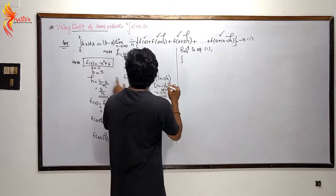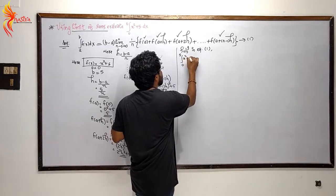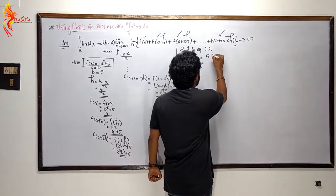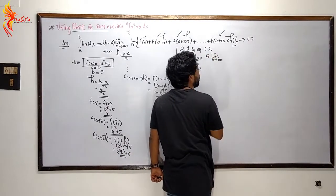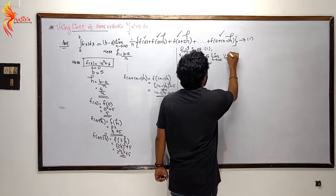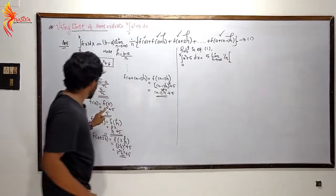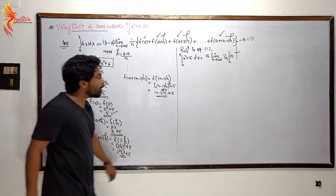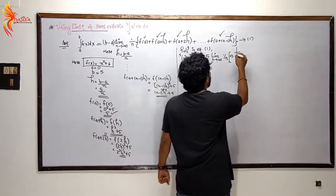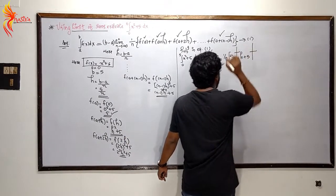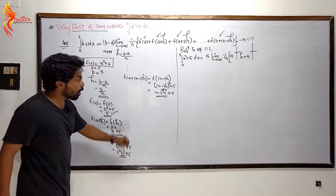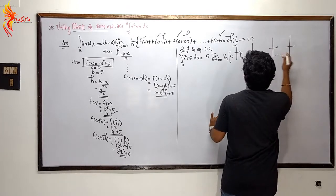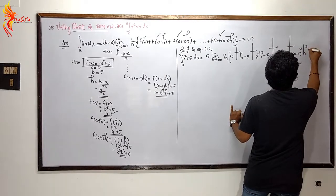The integral from 0 to 5 of x squared plus 5 dx equals (b minus a), which is 5 minus 0 equals 5, times the limit as n tends to infinity of 1 by n into f(a) plus f(a plus h) plus f(a plus 2h) plus ... plus f(a plus (n minus 1)h), giving us terms like h squared plus 5, 4h squared plus 5, and (n minus 1) squared h squared plus 5.